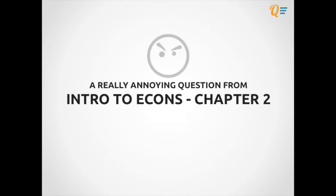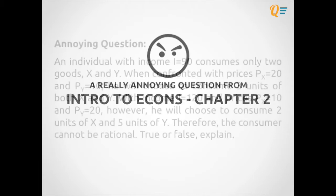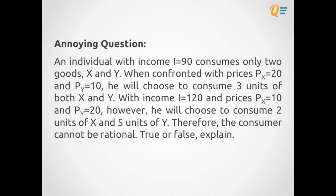Okay, so today we're going to be tackling a question that a lot of students have been struggling with. The question is: an individual with income of 90 consumes only two goods X and Y. When confronted with prices of 20 and 10 for good X and good Y, he would choose to consume 3 units of both goods.